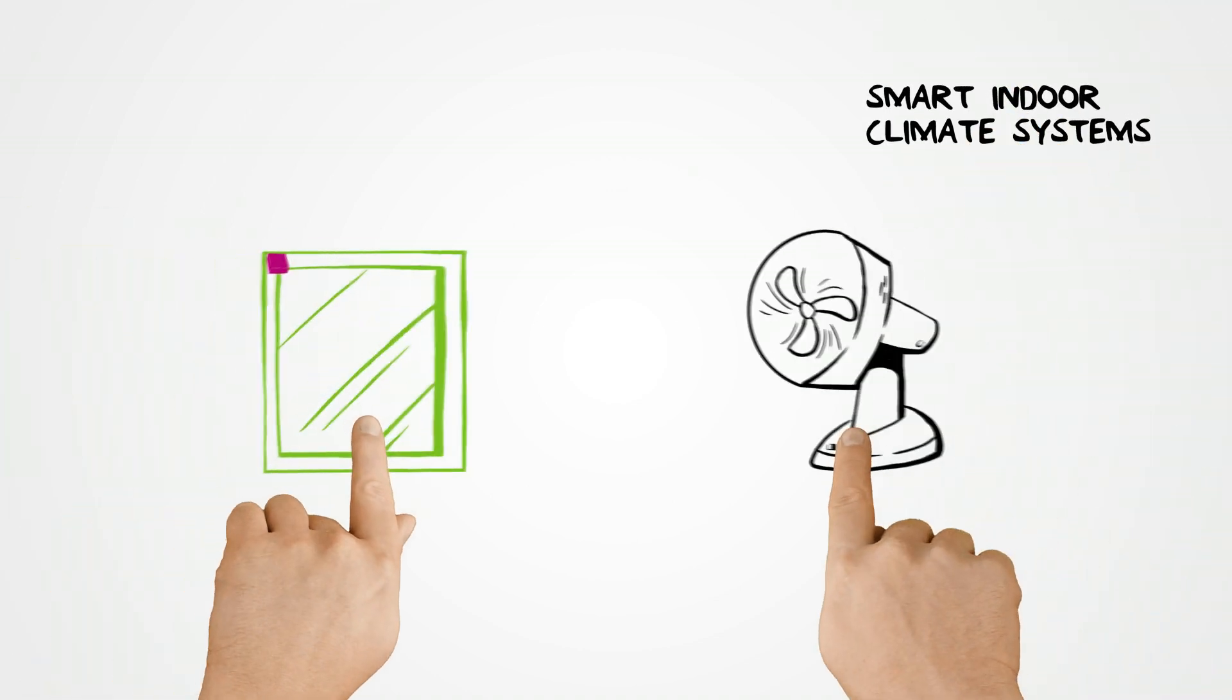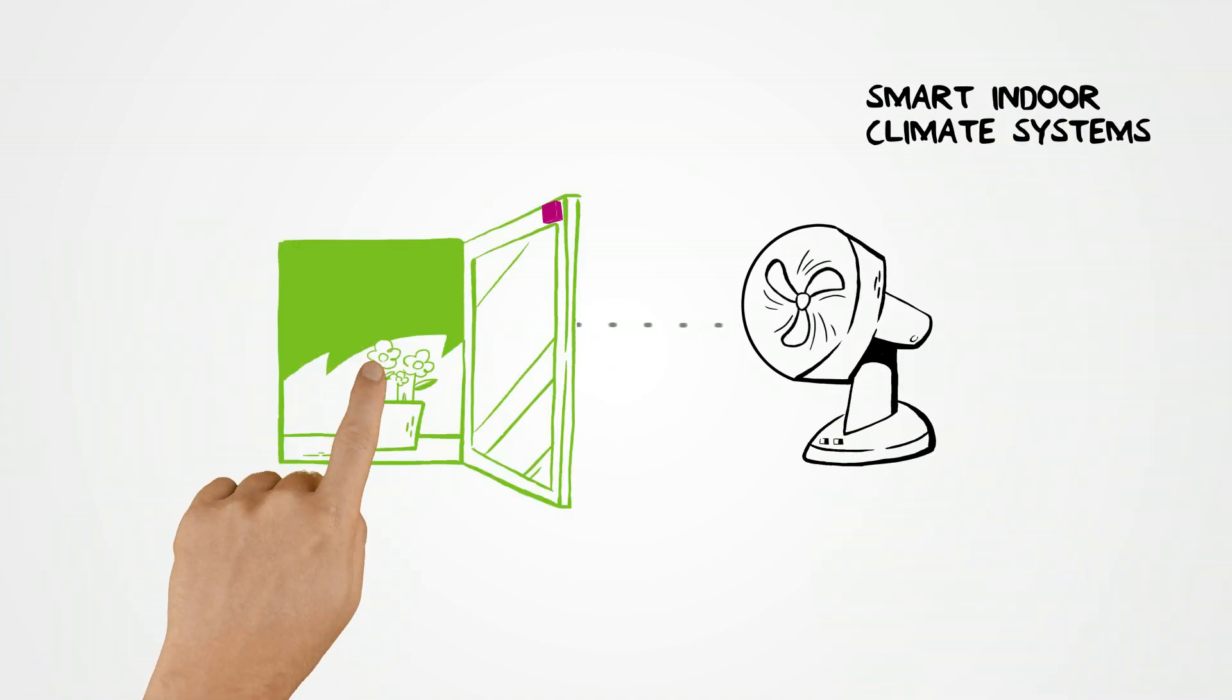For example, with automated air conditioning, precise tilt and orientation measurements detect the status and movement of windows and doors.